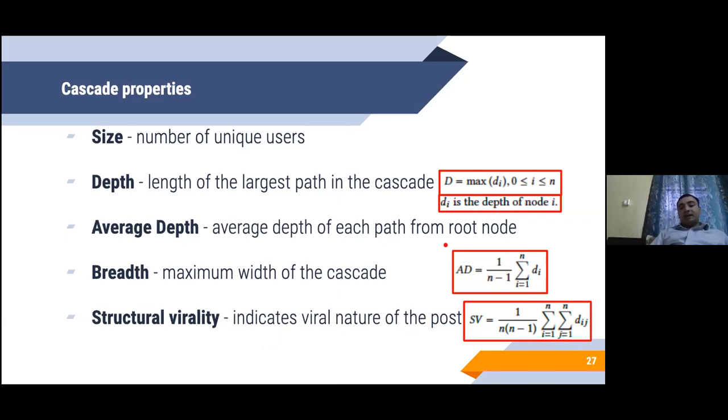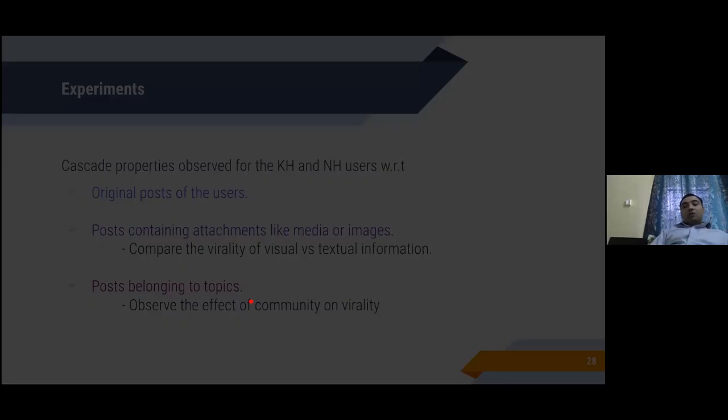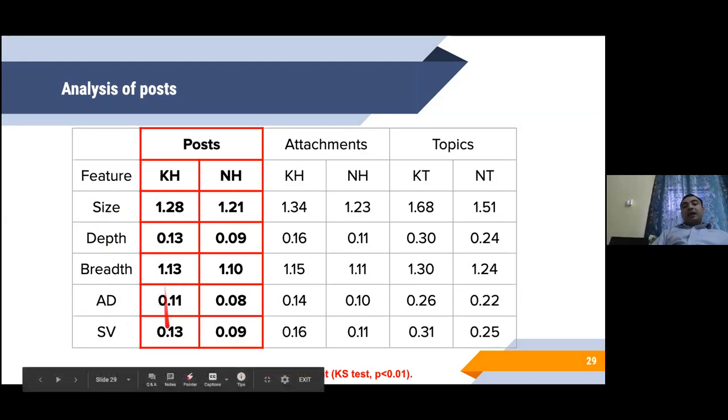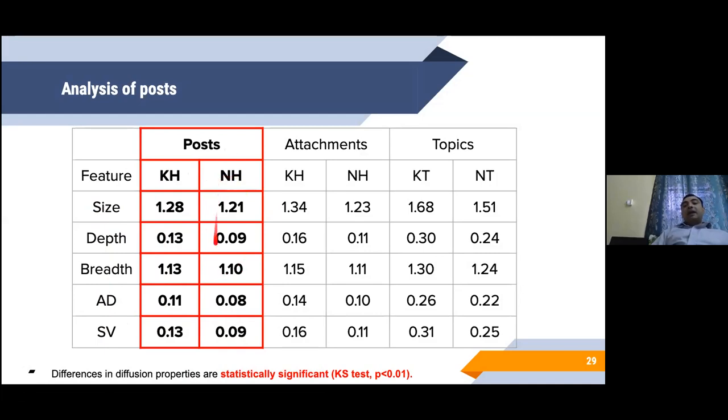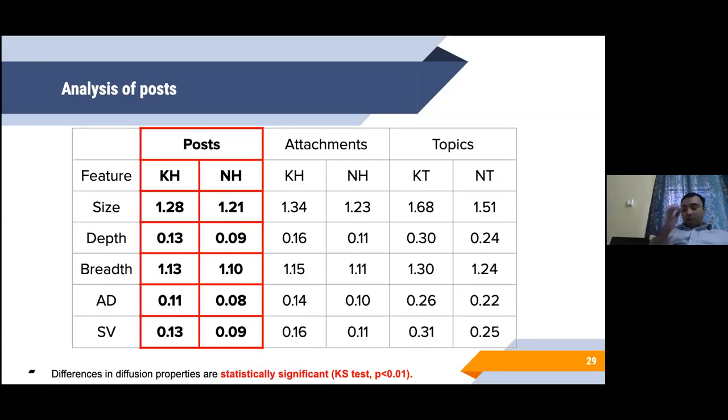If you measure these properties, we measure it on the original posts of the KH and NH users, on the posts containing media or images, multimodal content, and posts belonging to different topics. What we observe is that for all the different metrics—size, depth, breadth, average depth, structural virality—the values of the KH users, that is the cascades of the hateful users, have a larger value compared to the NH users. All these results are significant, significance tested through Kolmogorov test.